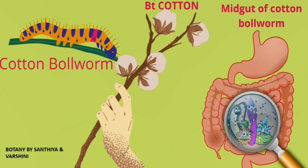You can see this in the picture. A cotton bollworm comes to feed on the BT cotton and it eventually dies.